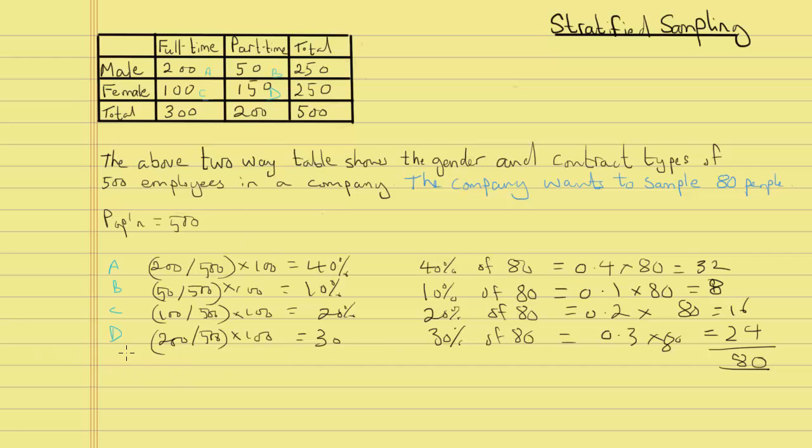Method 2 actually involves less calculation. The first thing we do is calculate a ratio and that ratio is sample size over population size. For this example this is 80 over 500.